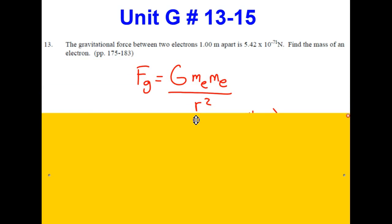We're going to start with Newton's universal law of gravitation equation. Fg equals big G, mass of one electron times the mass of the other electron divided by the distance between the electrons squared.